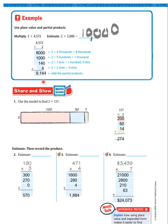Let's do this together. Use the model to find 2 times 137. It would be 2 times 100 is 200. 2 times 30 is 60. 2 times 7 is 14. I add it up. And I get 274.